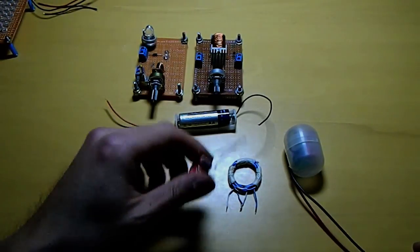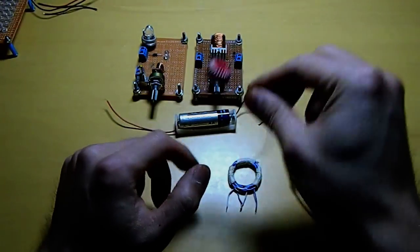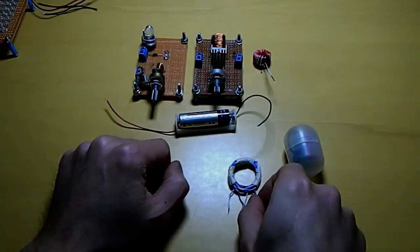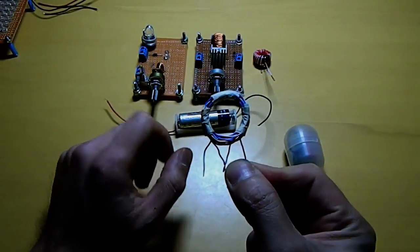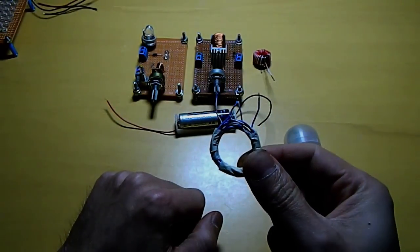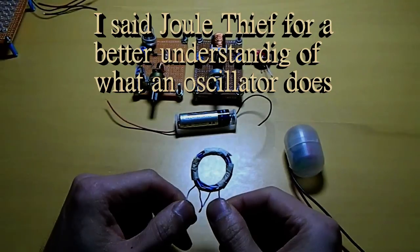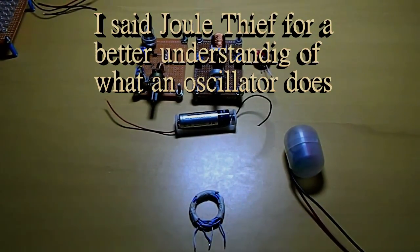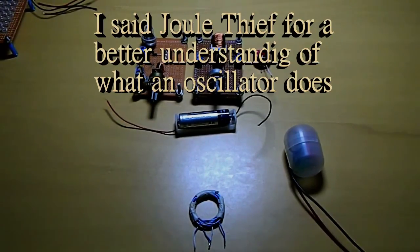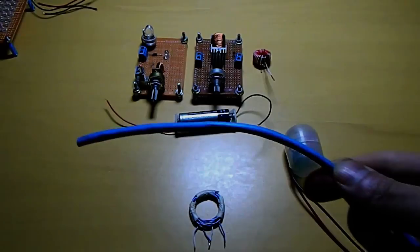But after a while making these things and windings and everything, I came up with this. This is an easy way for you to create your Joule thief to light up LEDs. This is made from a network cable. You just cut a network cable.